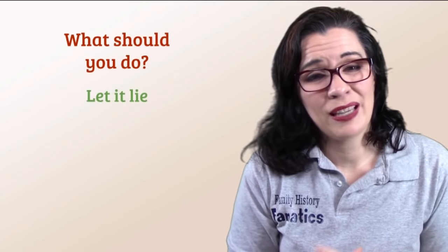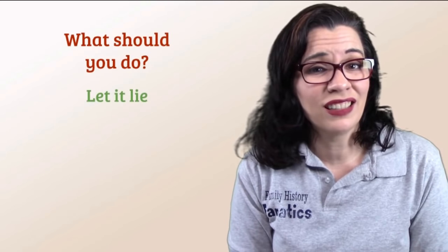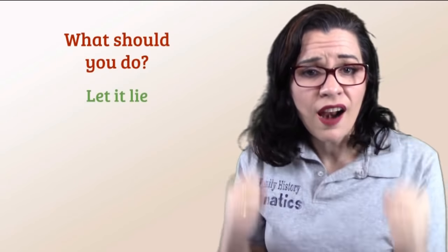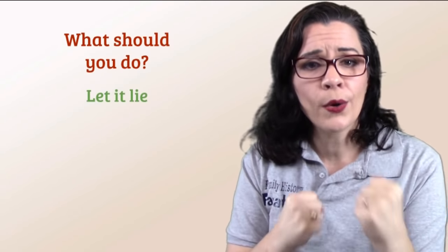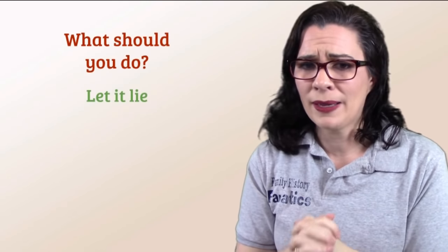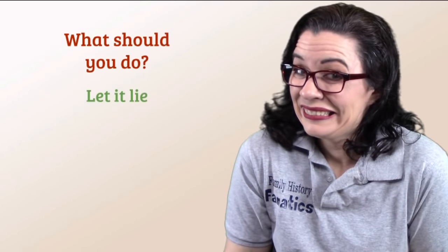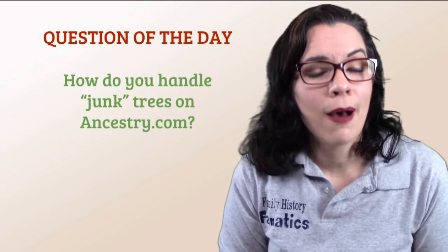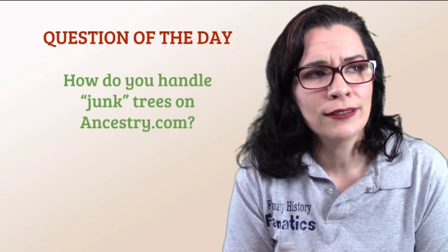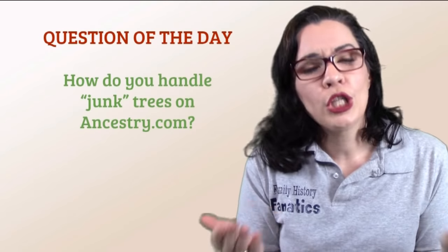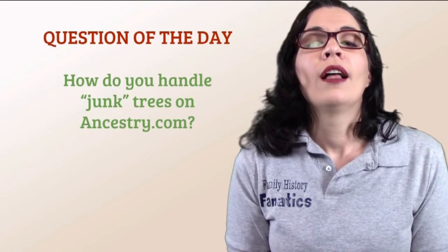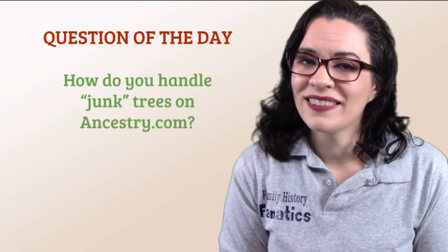My last tip is: sometimes that inaccurate information, you just have to leave it alone. Some people have trees where they're descendants of Thor and Odin and other mythological characters that are highly suspect to have even existed. That's my two cents on how to handle inaccurate information on Ancestry.com trees. I want to hear from you — what do you do? Do you get frustrated? Do you try to negotiate? Do you have strategies I haven't covered? Write all of that in the comment section below.